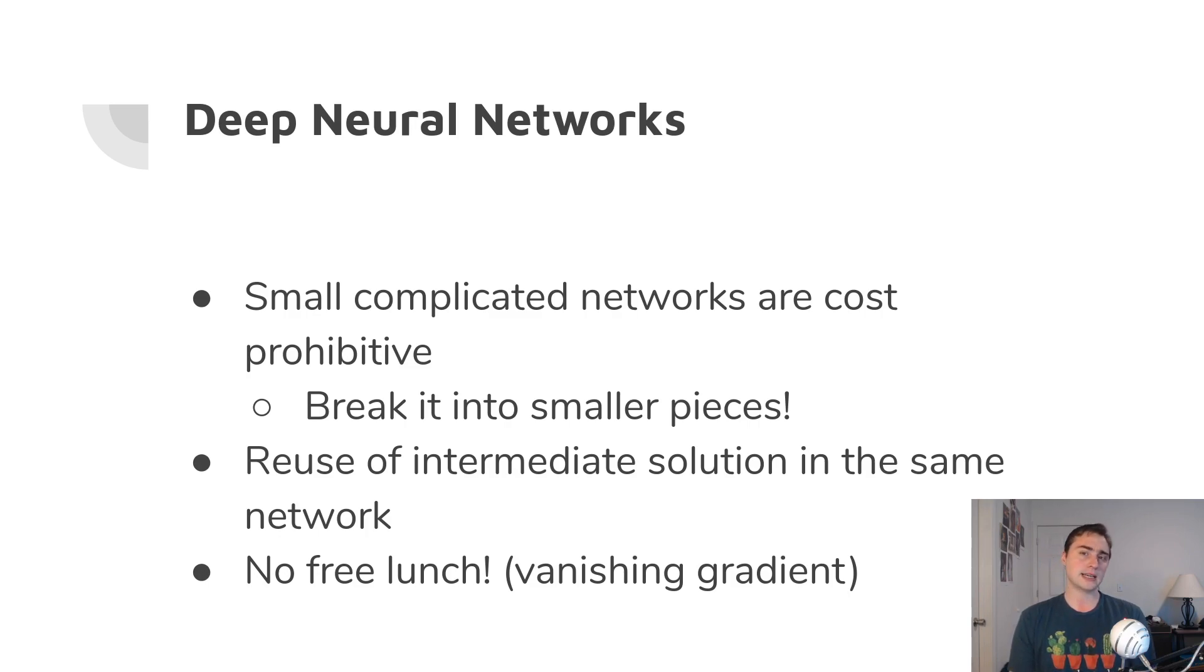Another thing about this is that we could have these giant single hidden layers that are massive. But the problem is that these small complicated networks are actually cost prohibitive. Just having a single hidden layer is not really feasible as a network design. But what we can do instead is just break it into smaller pieces like we typically do when we're trying to solve larger, more complex problems. Common optimization for matrix multiplication is cache tiling. So instead of solving the giant matrix multiplication all at once, you break it down into small subsets of problems that fit resident or that are resident inside of your cache. This has a number of benefits, including the ability to reuse the intermediate solutions in the same network. But this doesn't mean that they're without problems as well, which is what we're going to be talking about in the next section when we talk about learning, which is this thing called a vanishing gradient. We'll get into that more in the second half of chapter two, which is all about learning.